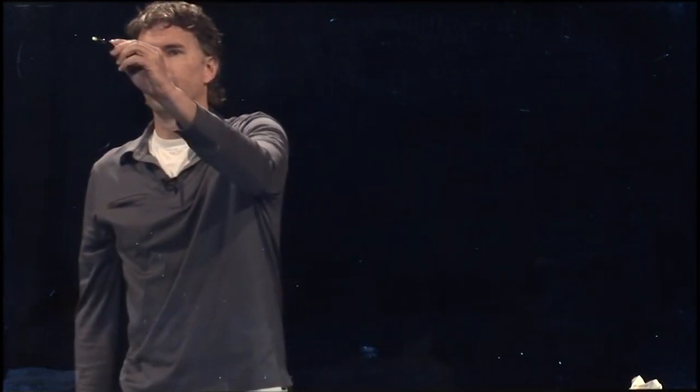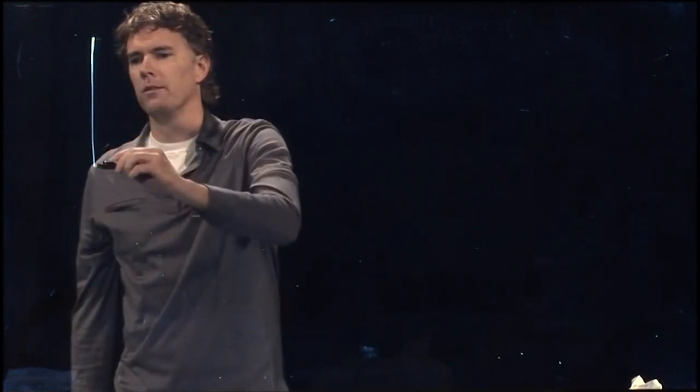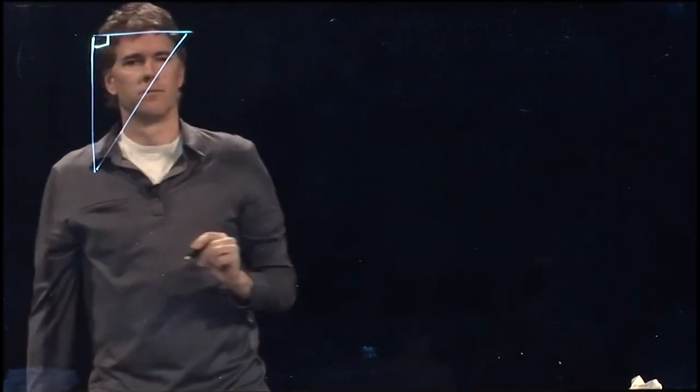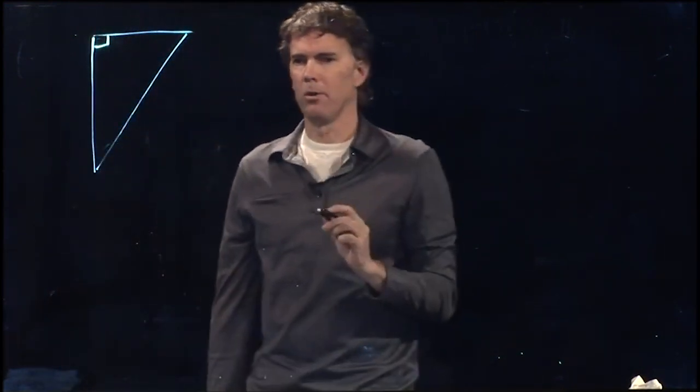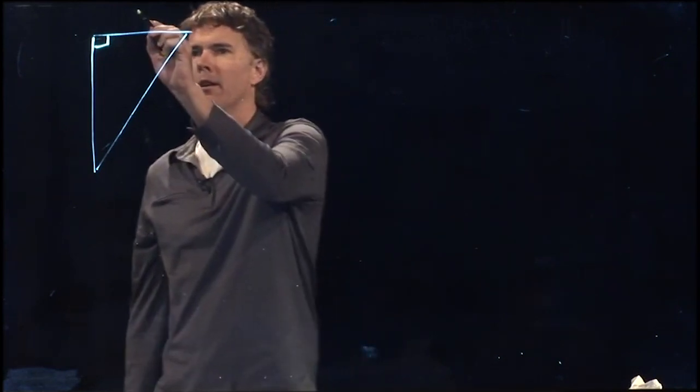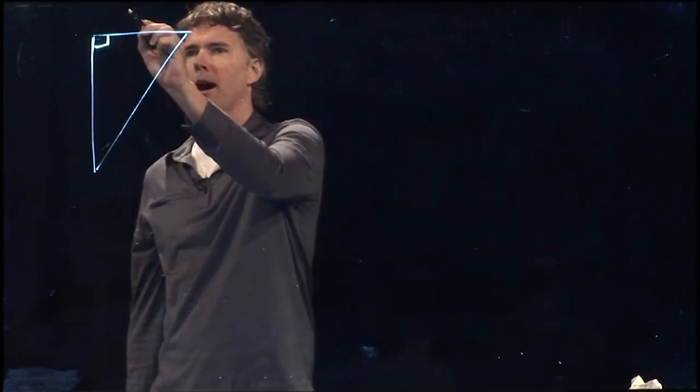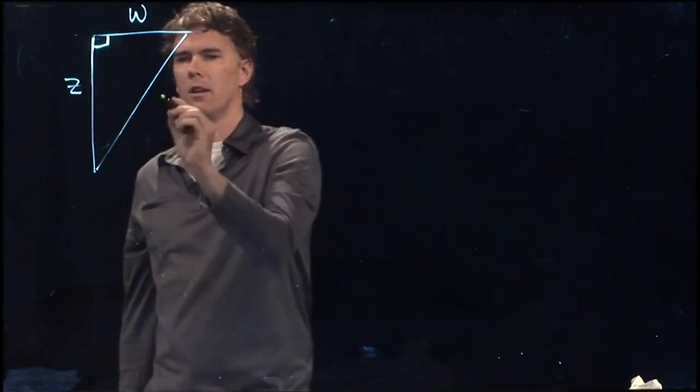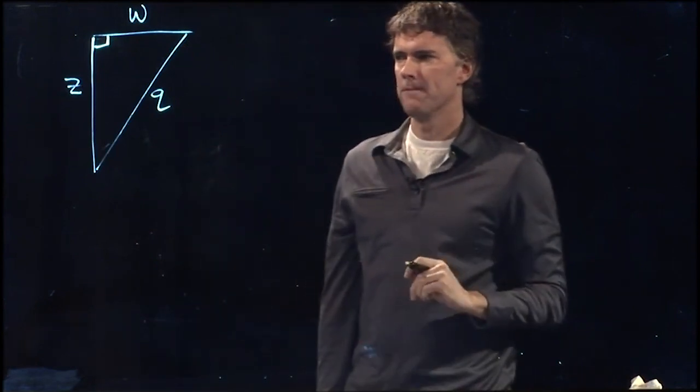So let's say we have a triangle that looks like this. And now let's label the sides. Let's make up some new ones. How about w, z, z, and q? Okay.